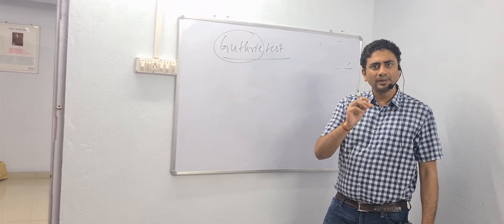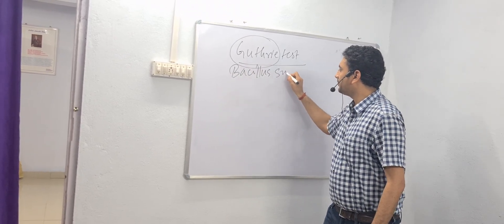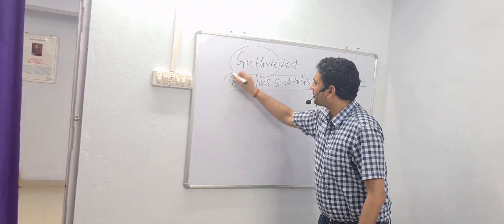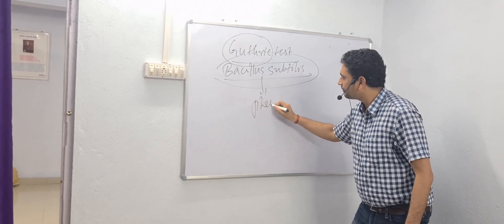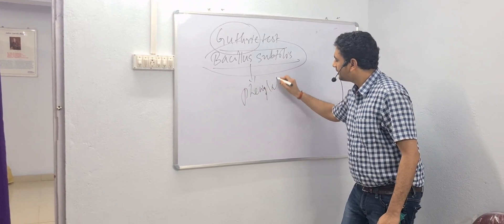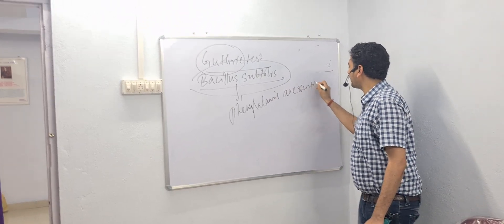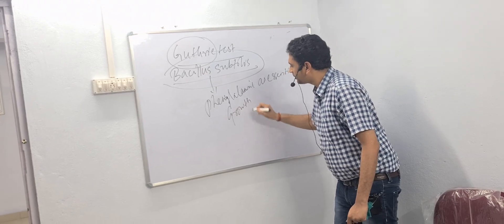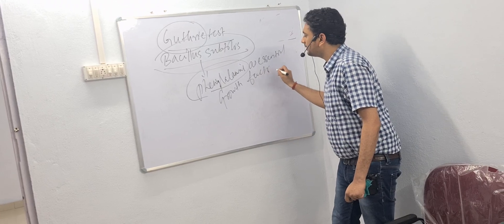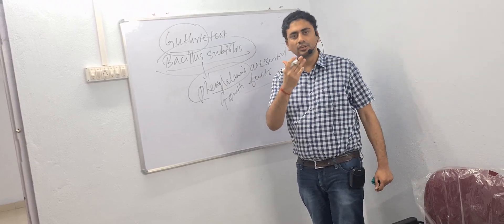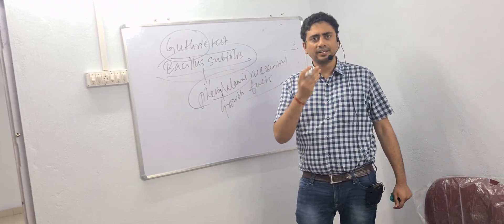The principle of the Guthrie test is based on certain strains of bacteria called Bacillus subtilis. This bacterium requires phenylalanine as an essential growth factor. Without phenylalanine, this strain of Bacillus subtilis cannot grow.